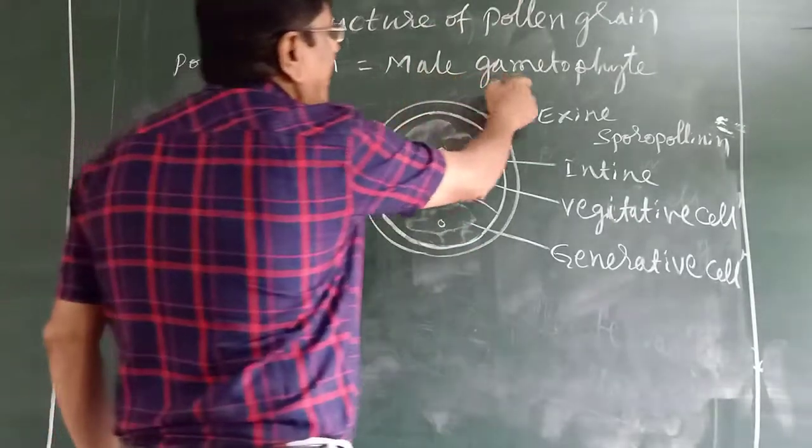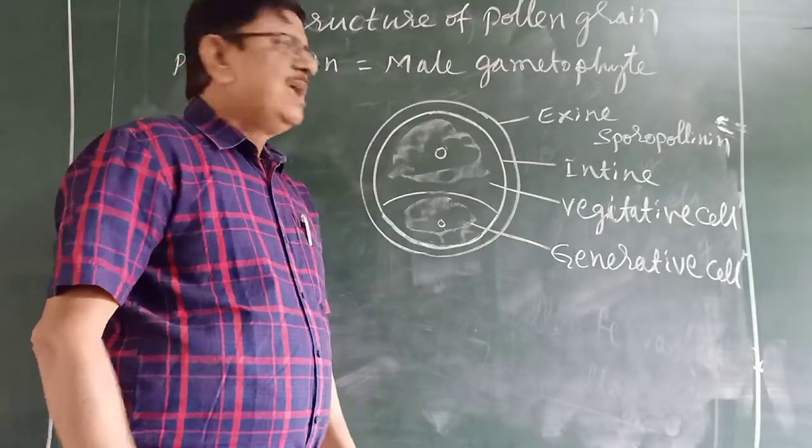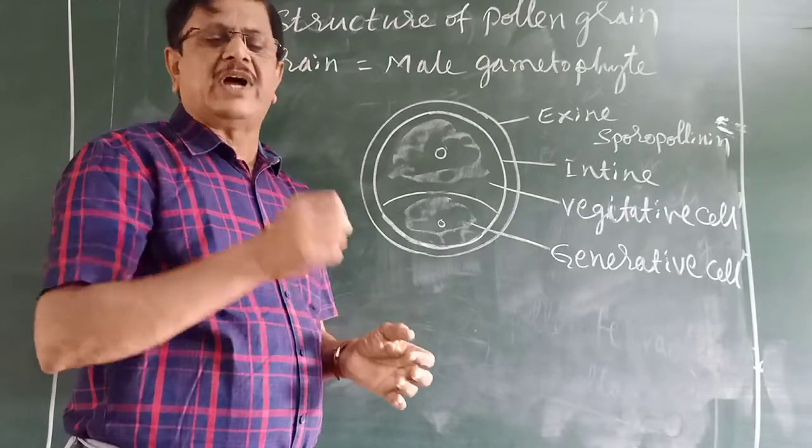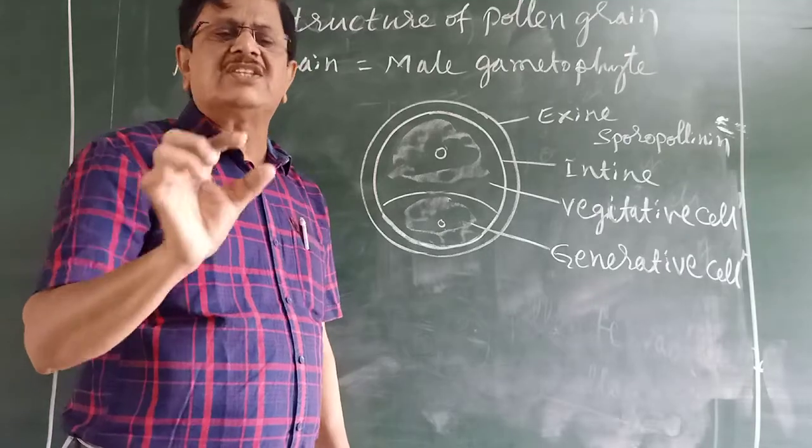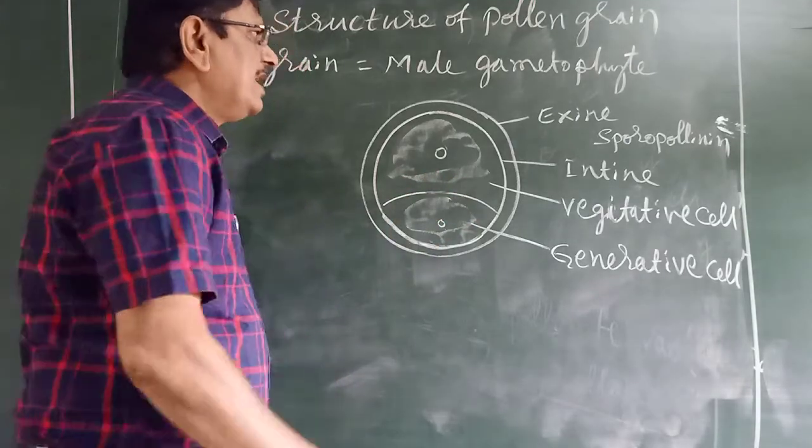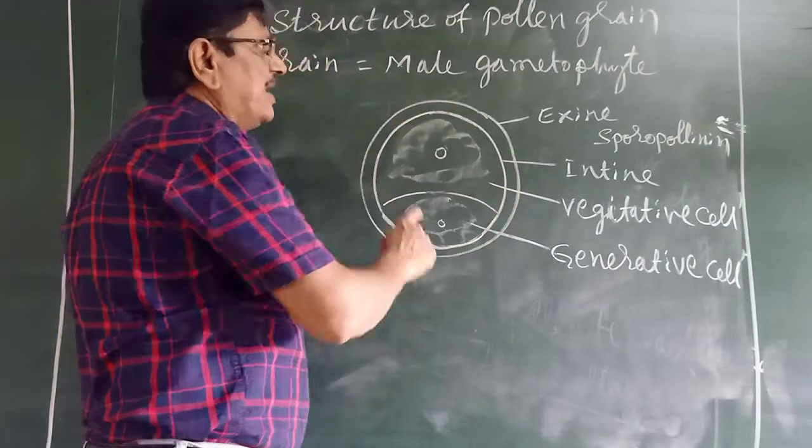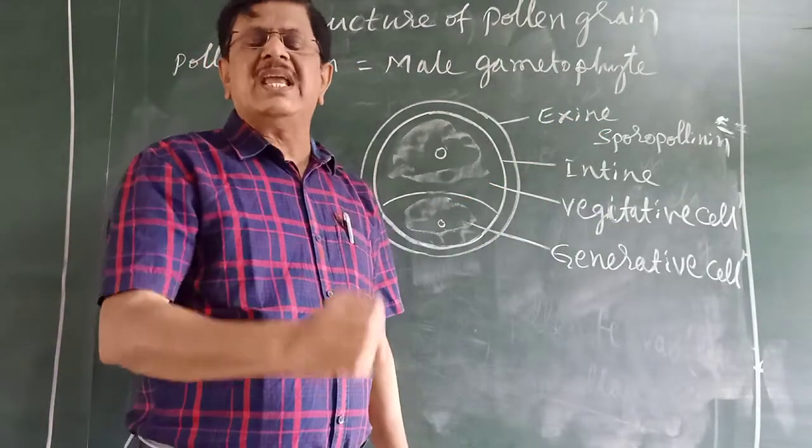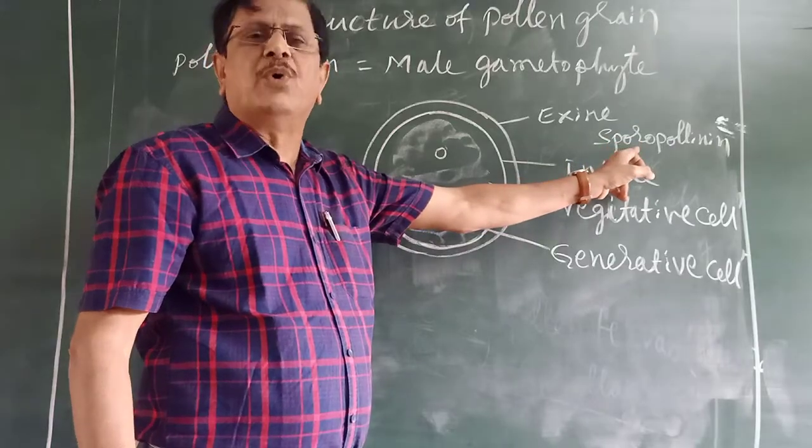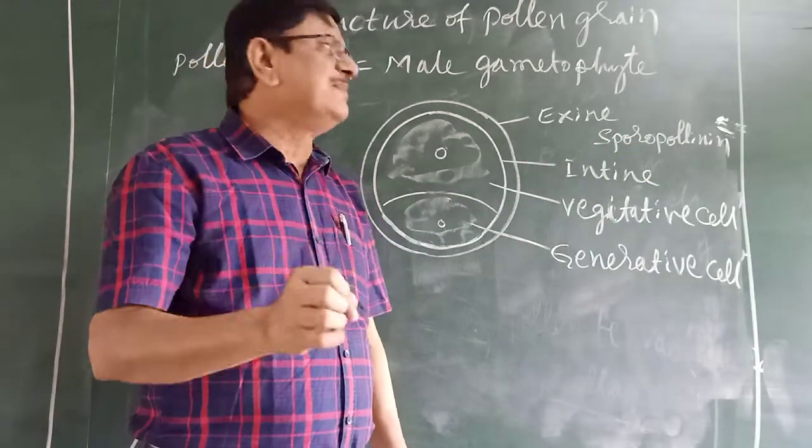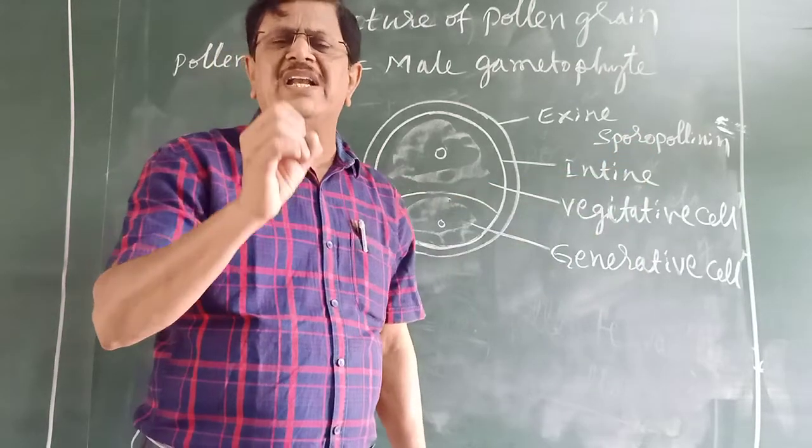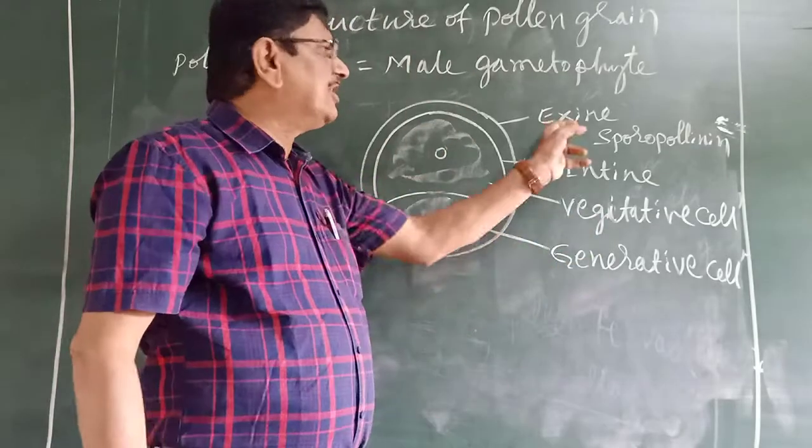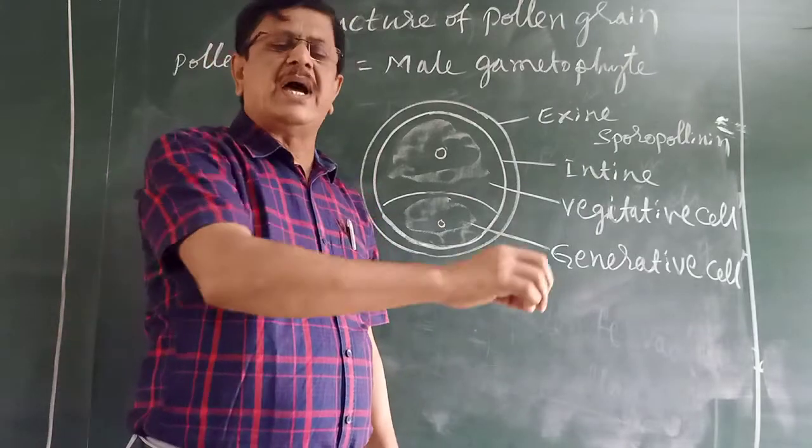The pollen grain is a male gametophyte. It is microscopic, having about two to five millimicrons in diameter, various in shape, usually round or oval. Each pollen grain is externally covered by a membrane or coat called exine. This exine is chemically made up of sporopollenin. It is very resistant to heat, acid, and alkaline because of sporopollenin.